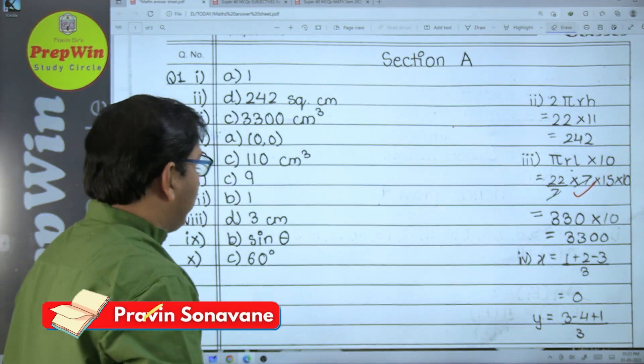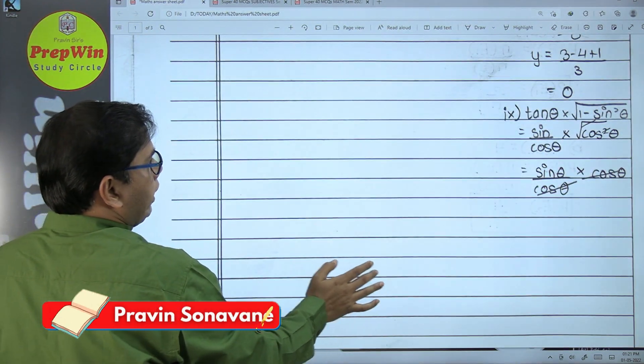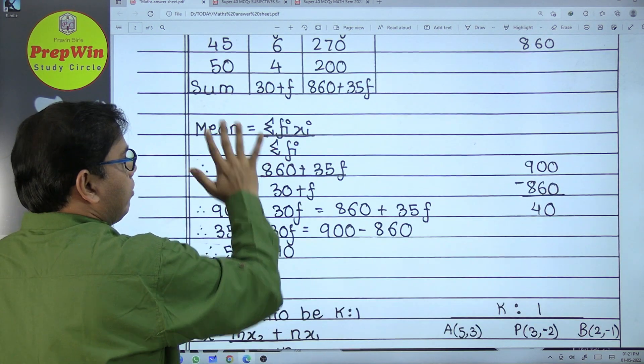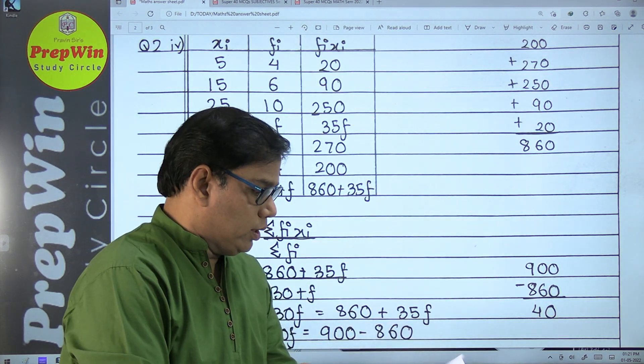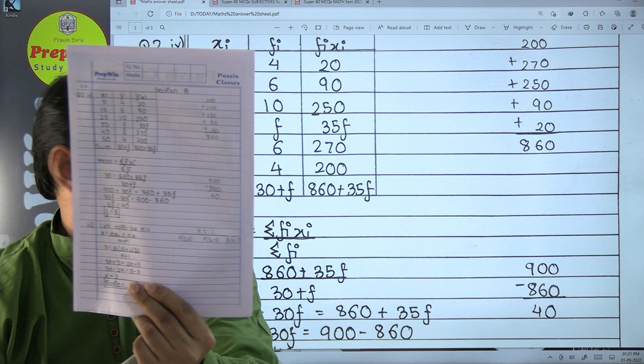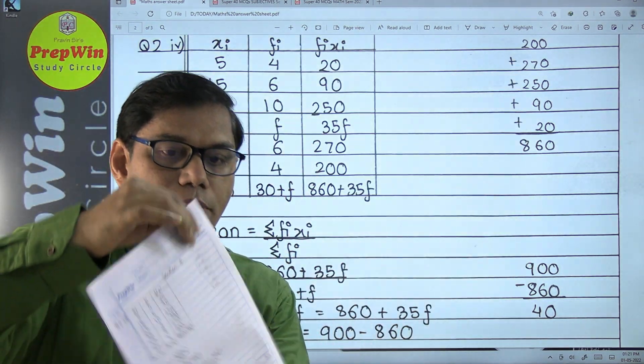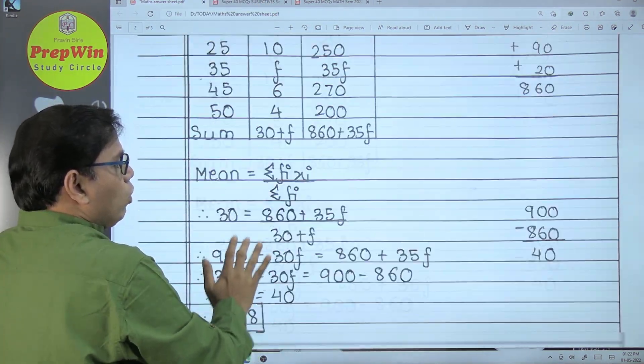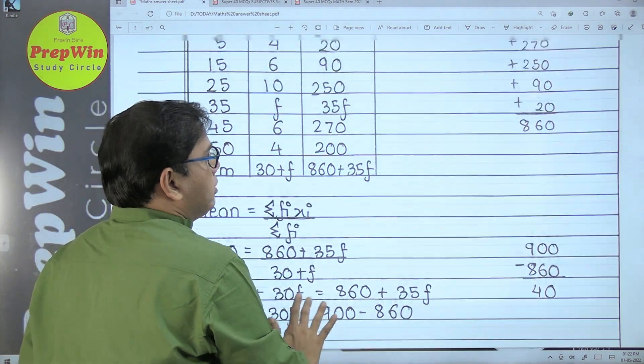You will see this student has done all the working on the right-hand side, solved on the left side, and pencil is used for this. Again, I will show you. This is fair work and this is working done with pencil. This working has been done with the pencil. Teachers are also smart; they know that whatever is written in pen is your fair work and whatever is written with pencil is your rough work.